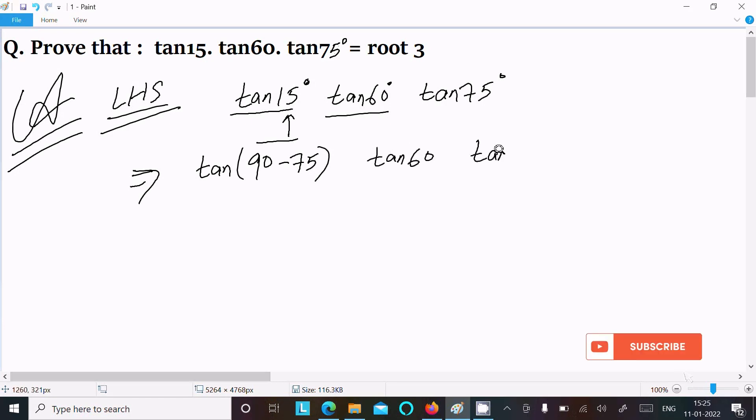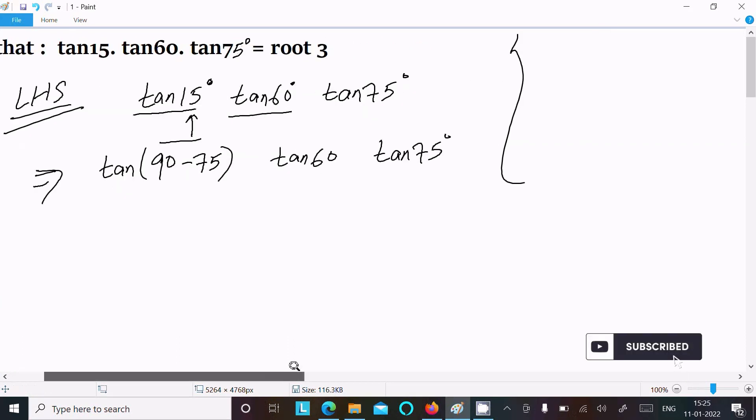After that here we know tan(90-θ) that is equal to cotθ. So here tan(90-75) that is equal to cot75, and there tan60·tan75.